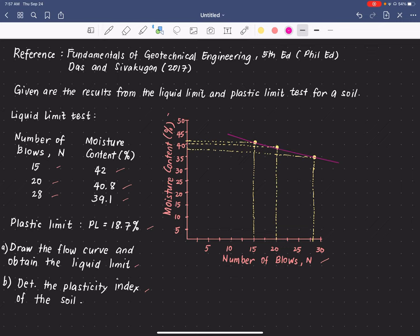So this is the flow curve, and from the flow curve we can determine the liquid limit by getting the intersection of the flow curve and the N equals 25. So this one, we go up and try to intersect this point and whatever the moisture content...